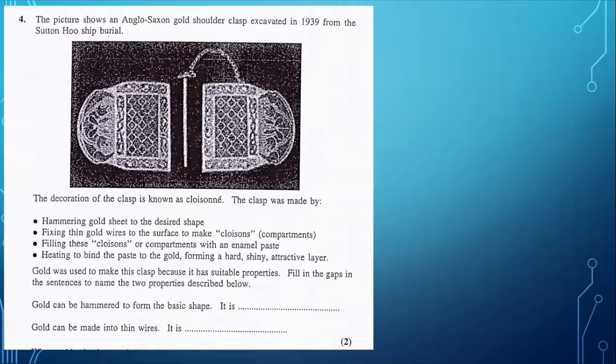Gold can be hammered to form the basic shape. Gold can be made into thin wires. What are the descriptors here? Yes, of course, gold is malleable. Gold is ductile.